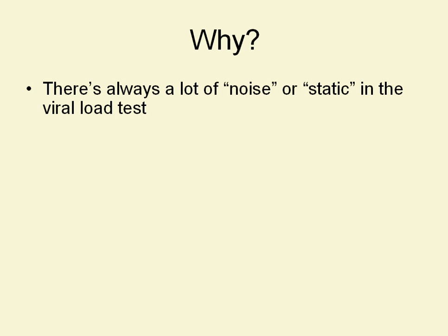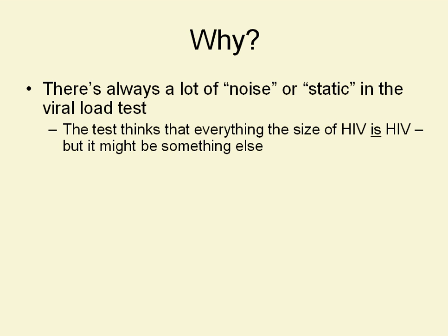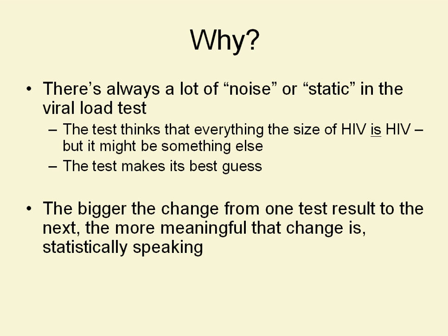The question is why. When we're looking at a tablespoon of blood and trying to count all of the viral particles — all the virions — in it, there's always a lot of noise or static in the viral load test. We're dealing with things that are very tiny, and the test thinks that everything that's the size of HIV is HIV, but it might be something else entirely. So the test makes its best guess, and it doesn't know enough to do a firm identification of HIV. It's doing it based on size and reaction.